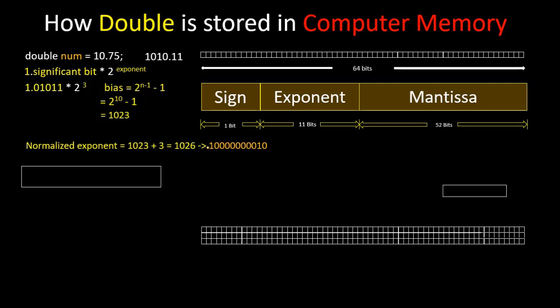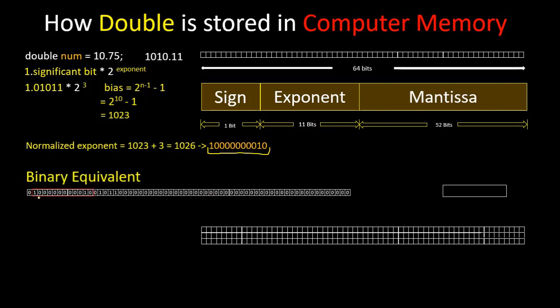If we convert this into binary then it will look like this. And the binary equivalent we have in our computer memory: here we have 0 because this number is a positive number, and then we have here 11 bit for exponent. This exponent will go here. And the significant bit 01011, this bit will go here. And the value of the rest bits are 0.